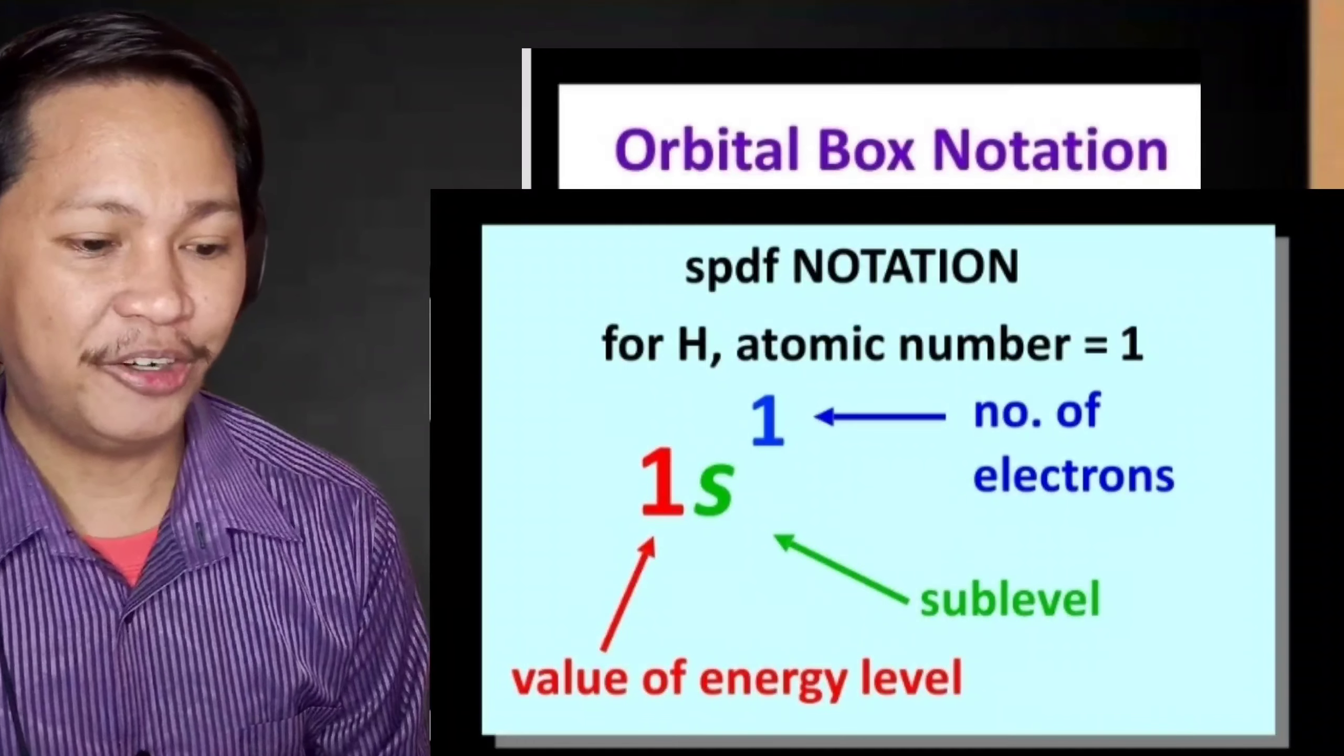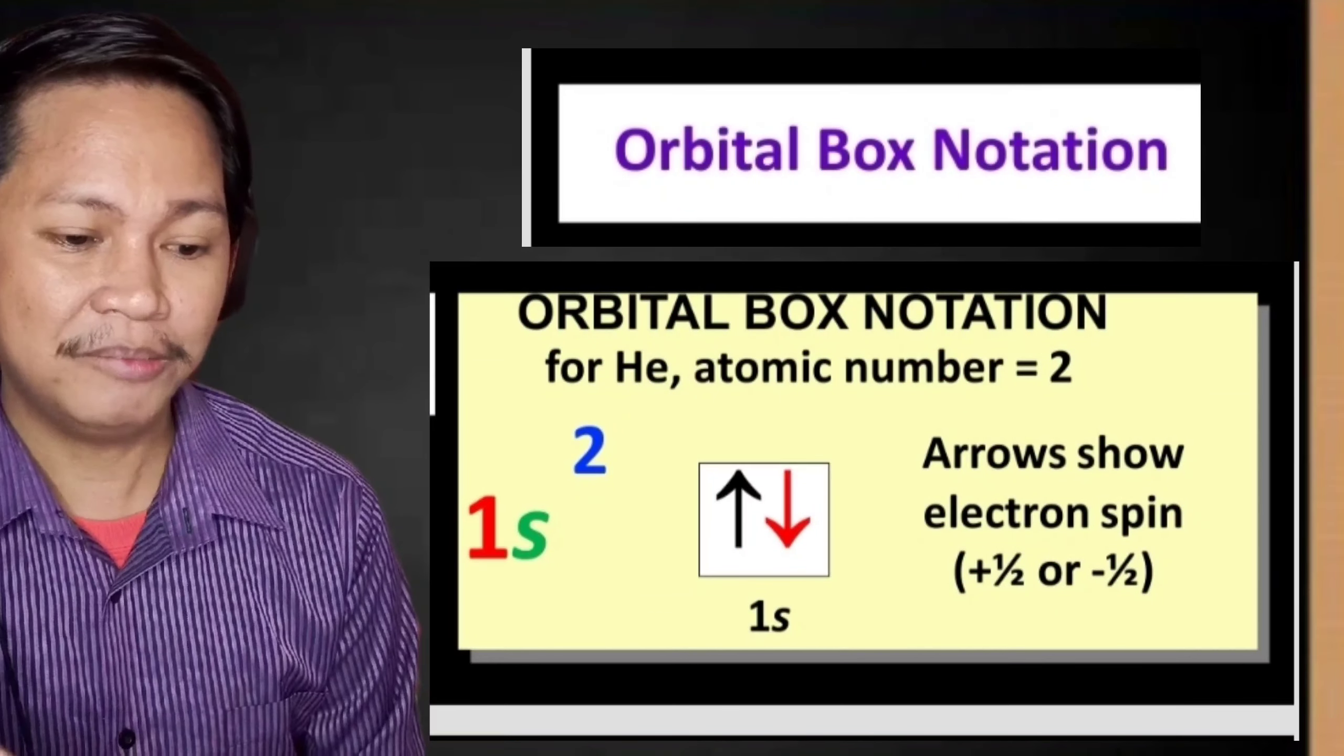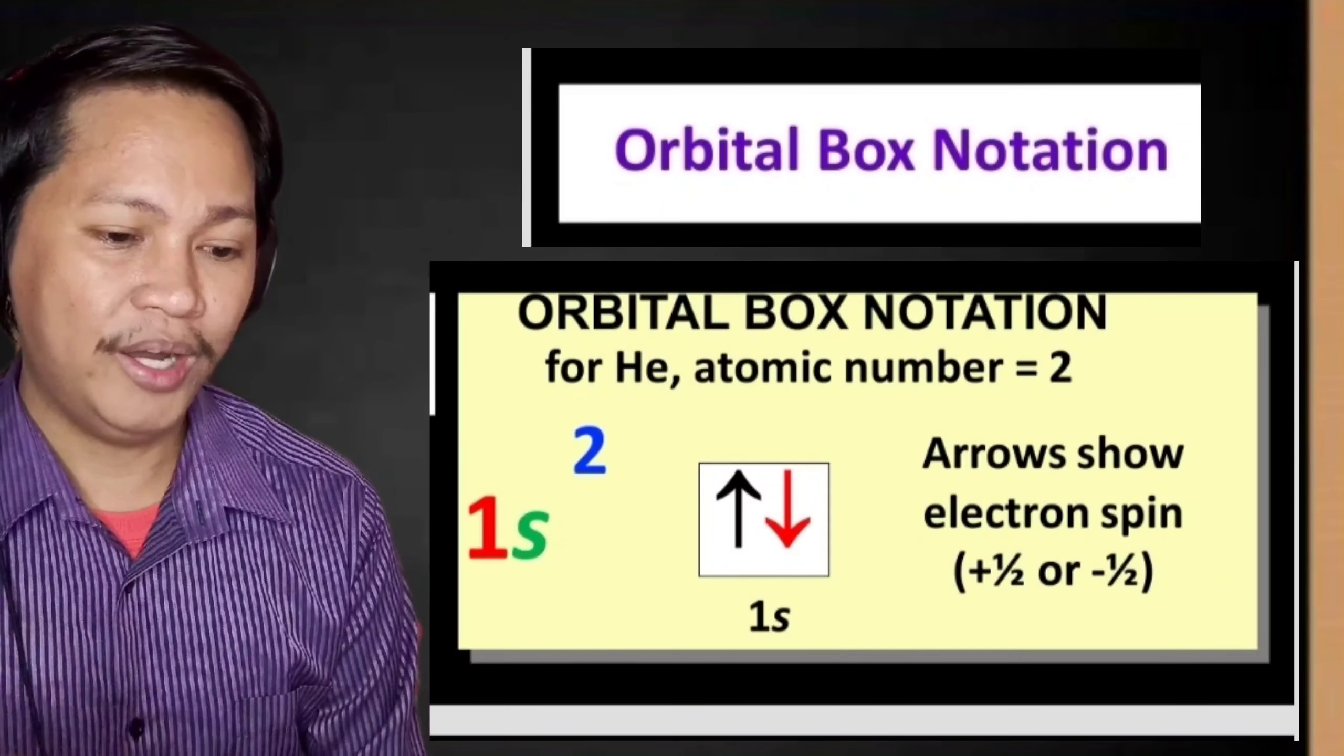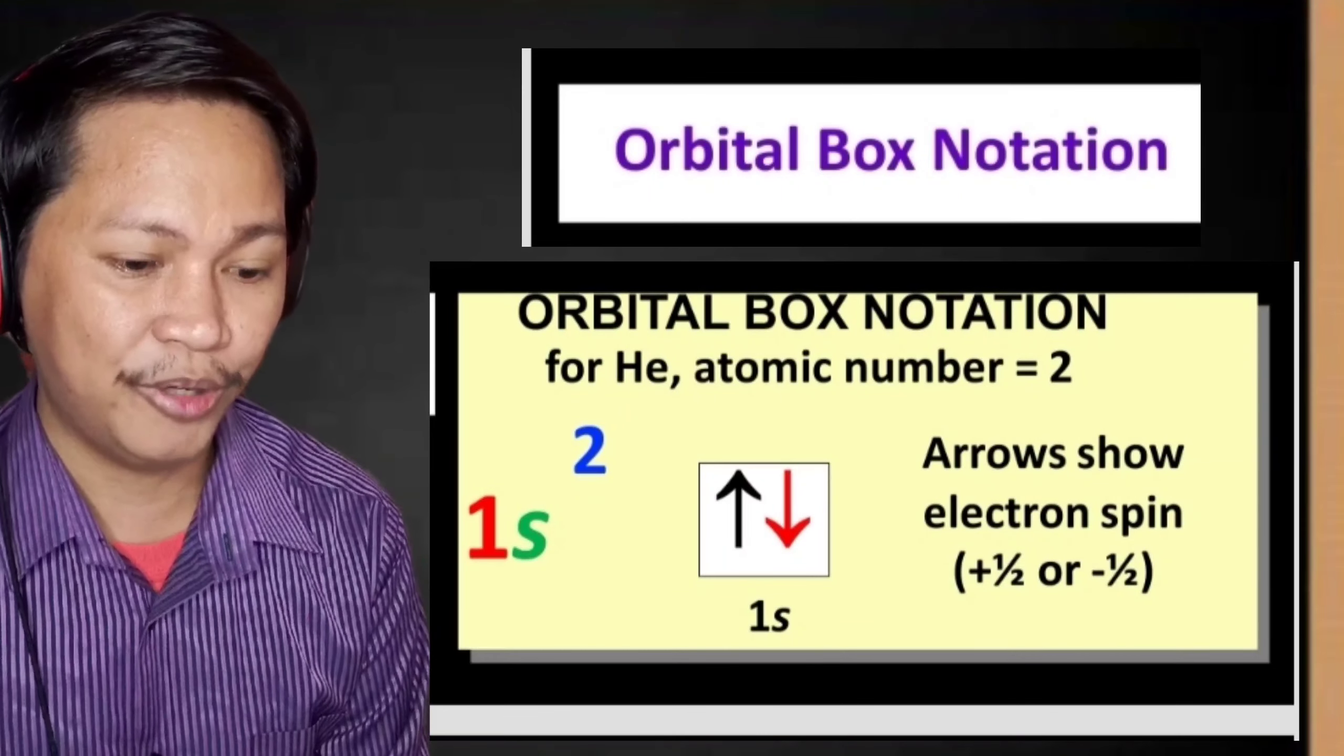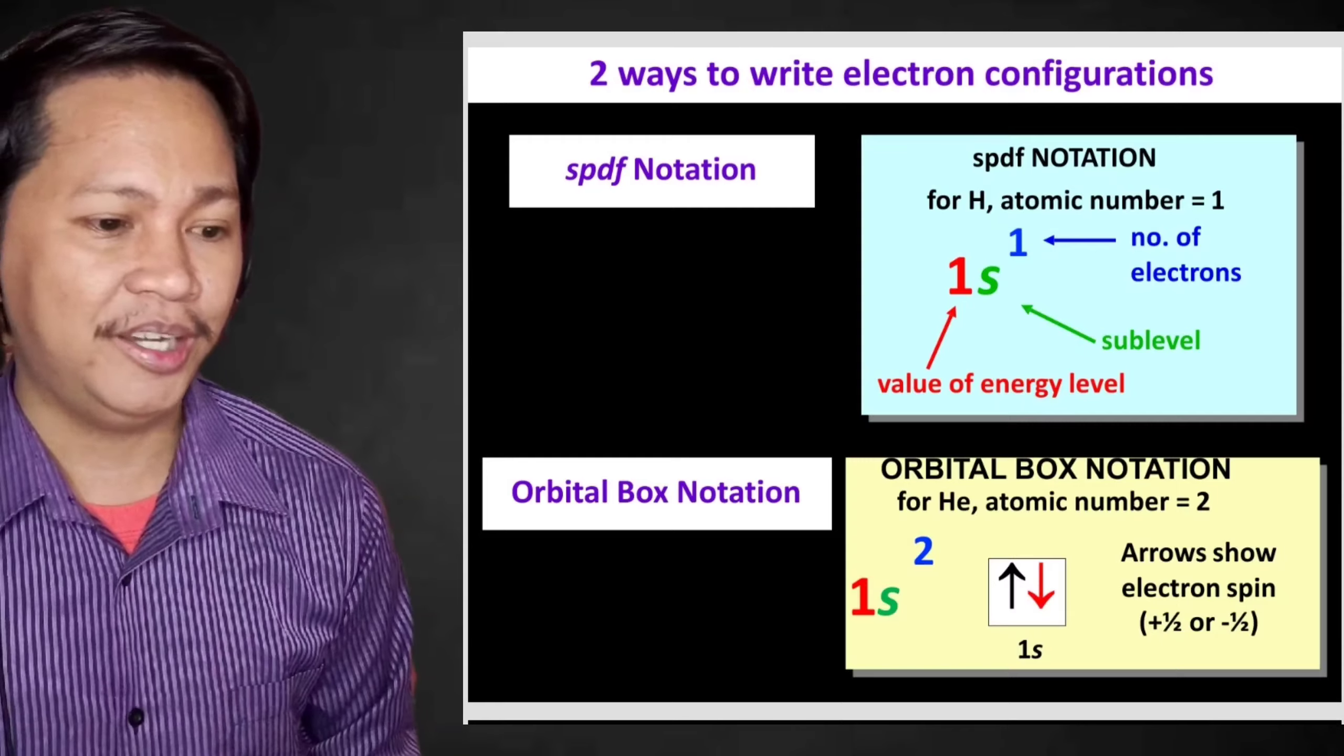For example, atomic number 1 for the element hydrogen. Atomic number is 1. This is how we write the SPDF notation: first, we contain 1—1 for the value of energy level, S for the sublevel, and 1 for the number of electrons. The second way is the orbital box notation. For example, helium has atomic number 2, so we have 1s2. In the box, it contains a maximum of 2 electrons: one arrow up, one arrow down. The arrow shows electron spin.